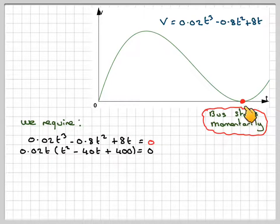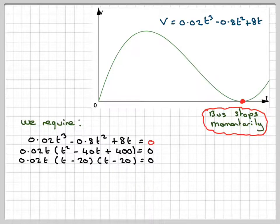This is a perfect square because you're going to expect a repeated root. So you're going to get 0.02t. If you factorize this, you're going to get t minus 20, t minus 20 equals 0, a repeated root. Therefore, t is 0, or t is 20, which is the one that we actually want.